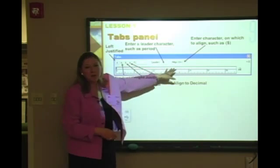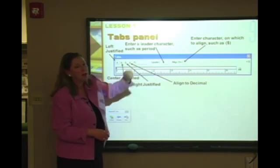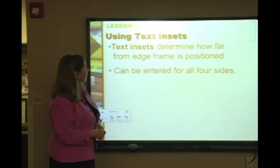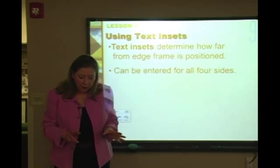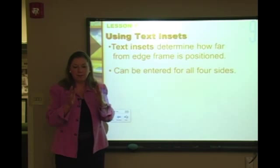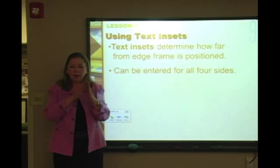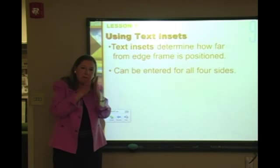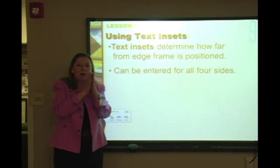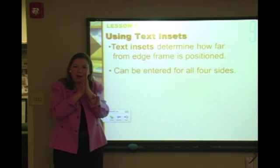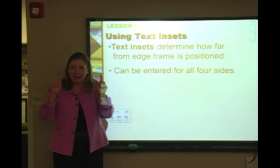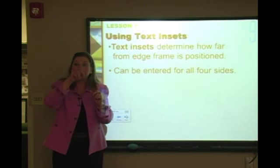The Align On field is usually a decimal, but it could be a dollar sign or any character. Another thing we'll look at today is text inset. Sometimes text smashes right up to the edge of a frame — text inset adds space between the text and the frame edge. The inset can be the same all the way around, or different amounts at the top, bottom, or sides.